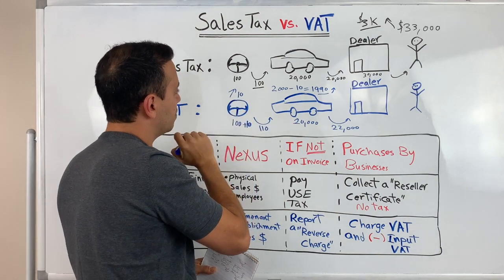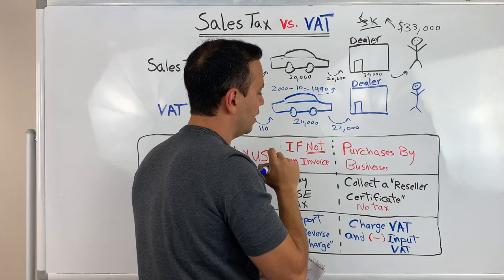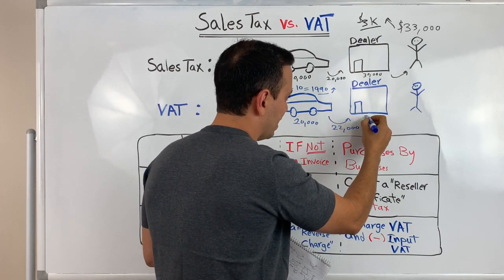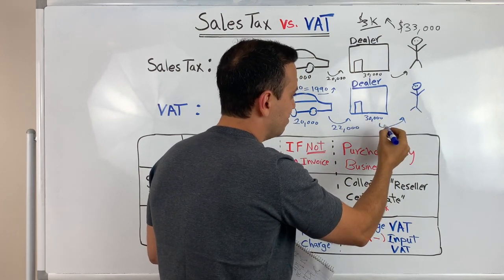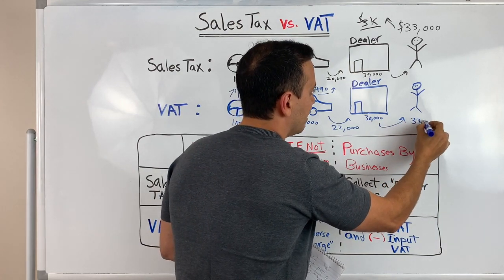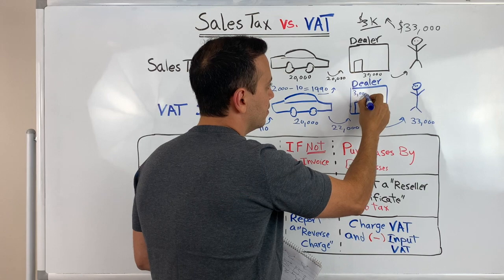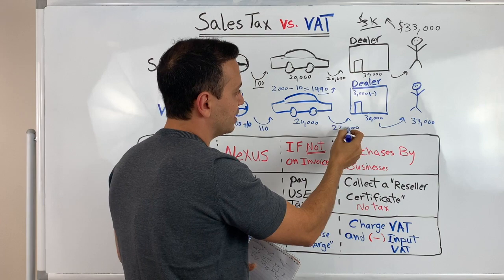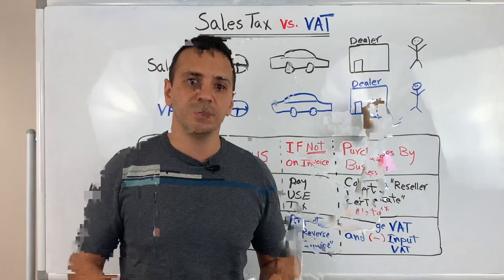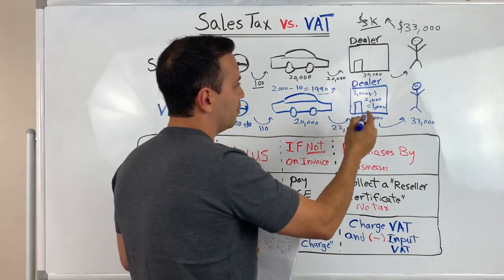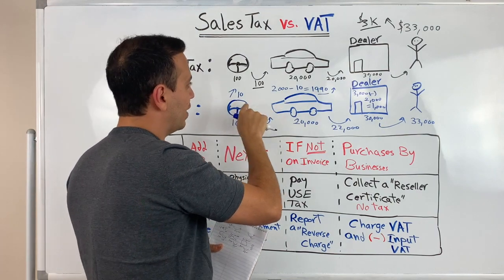So far, the government got 10 euros from the steering wheel manufacturer and 1,990 euros from the car manufacturer. The dealer gets the vehicle for 22,000 euros and wishes to sell it for 30,000 euros. They sell it to the end consumer for 30,000 plus 10% VAT, which comes to 33,000 euros. They remit 3,000 to the government but get to deduct the input VAT — the 2,000 they were charged on the invoice from the car manufacturer — so 3,000 minus 2,000 equals 1,000 remitted to the government.